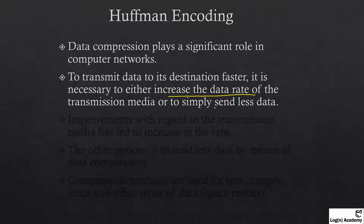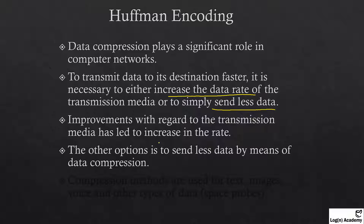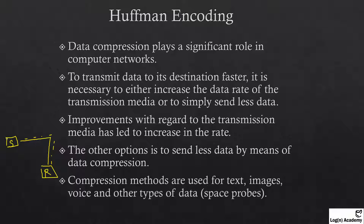It is necessary to either increase the data rate of the transmission media or to simply send less data. Improvements with regard to transmission media have led to increased rates, but the other option is to send less data by means of data compression. When an application sends data between two channels, it can compress that data — this is very helpful. If we can reduce the data packets sent from sender to receiver, we can send data faster.